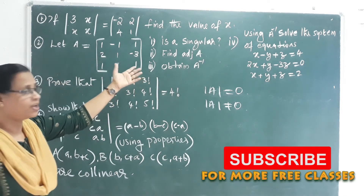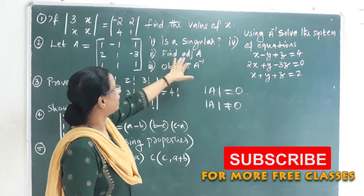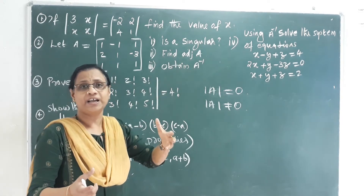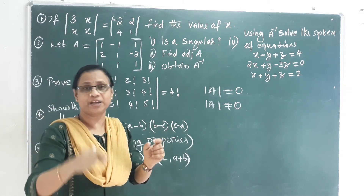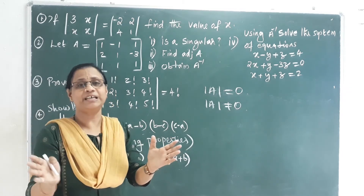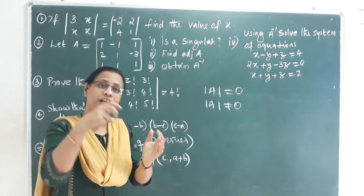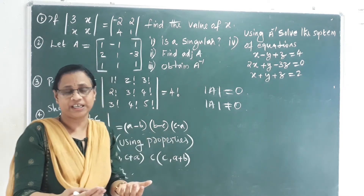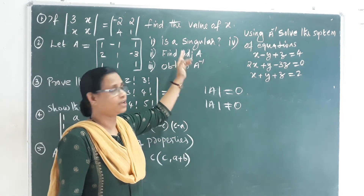The next question: Find the adjoint. The adjoint of A, written Adjoint A, requires finding the Minor of each element — eliminating that element's row and column, then applying signs to get the Cofactor. After finding all cofactors, we take the Transpose to get Adjoint A.